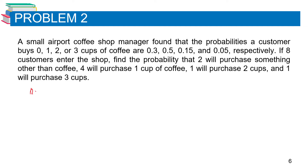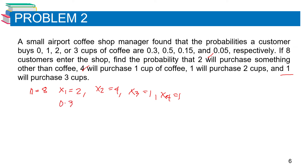For this problem, n equals 8. x₁ equals 2, x₂ equals 4, x₃ equals 1, and x₄ equals 1. The probabilities are: p₁ equals 0.3, p₂ equals 0.5, p₃ equals 0.15, and p₄ equals 0.05.